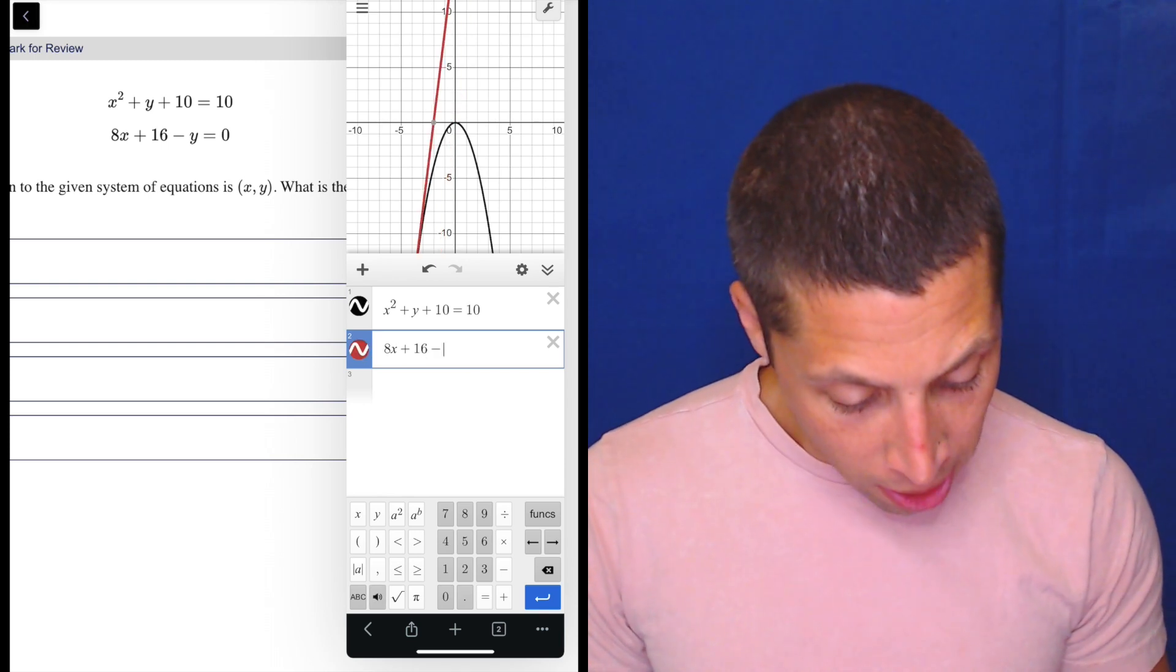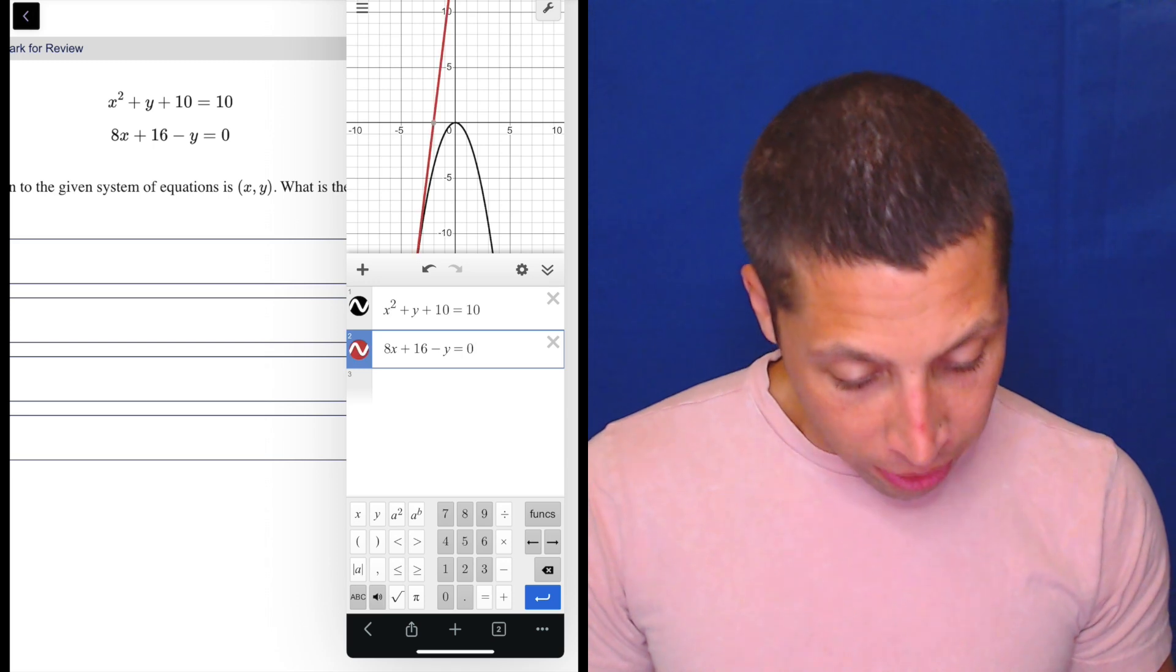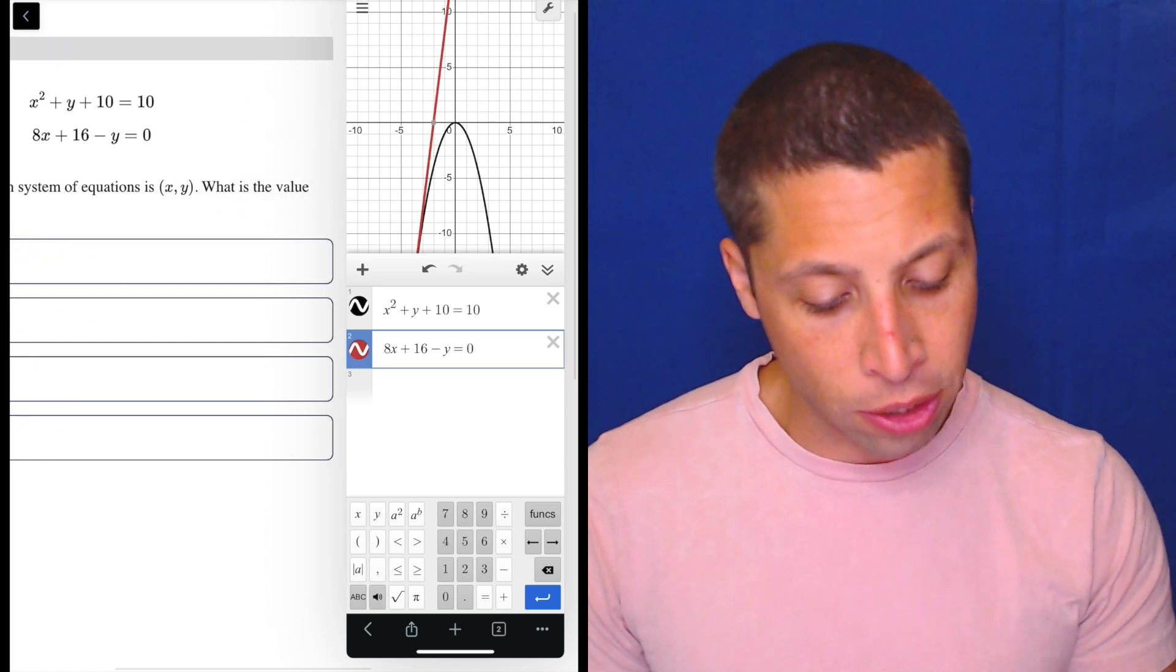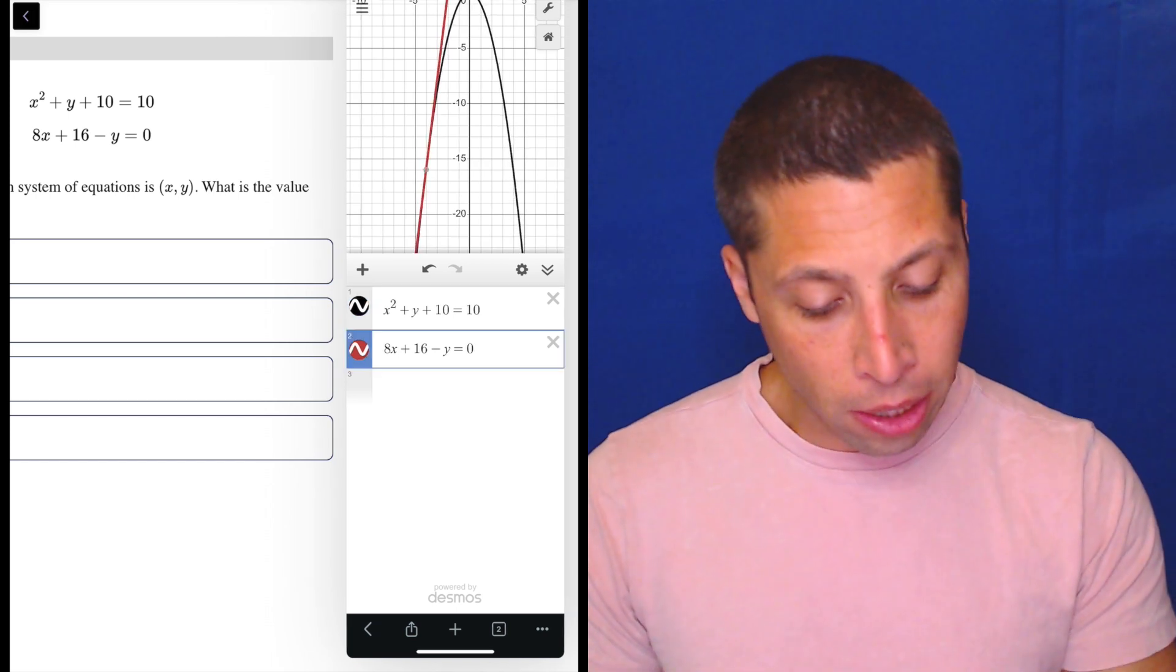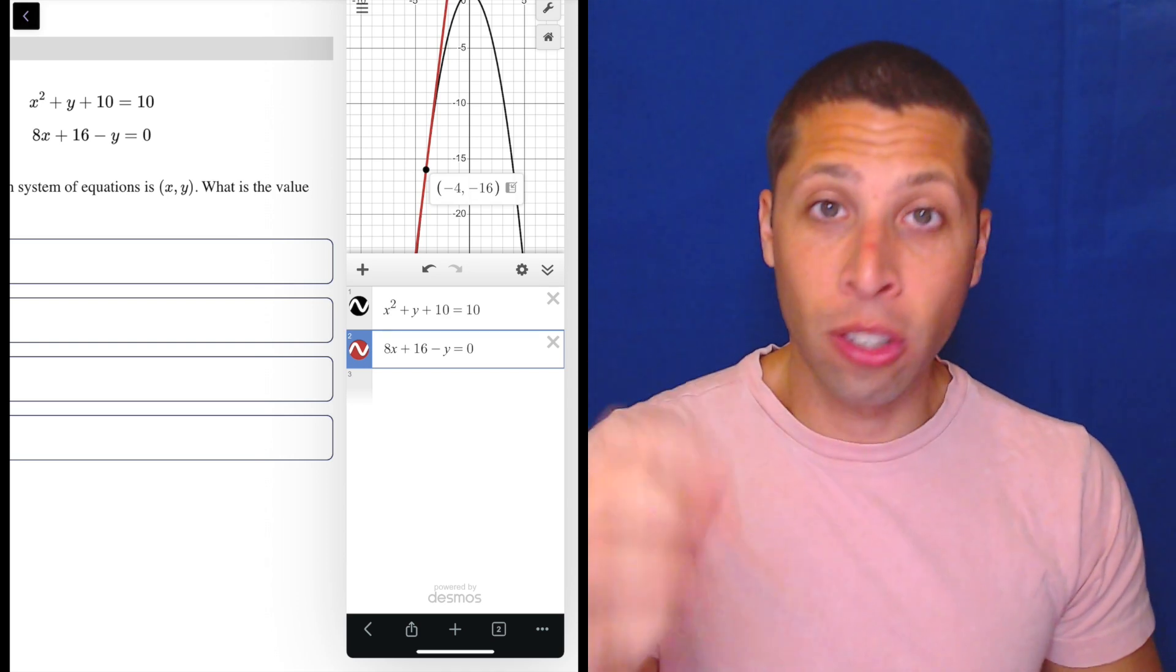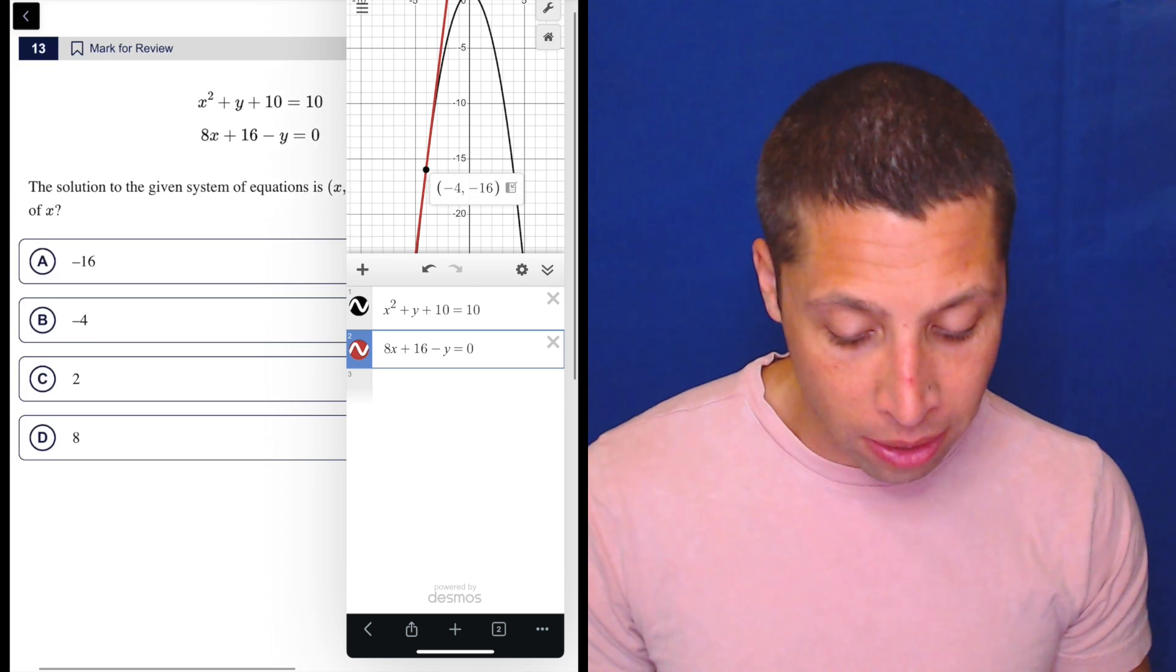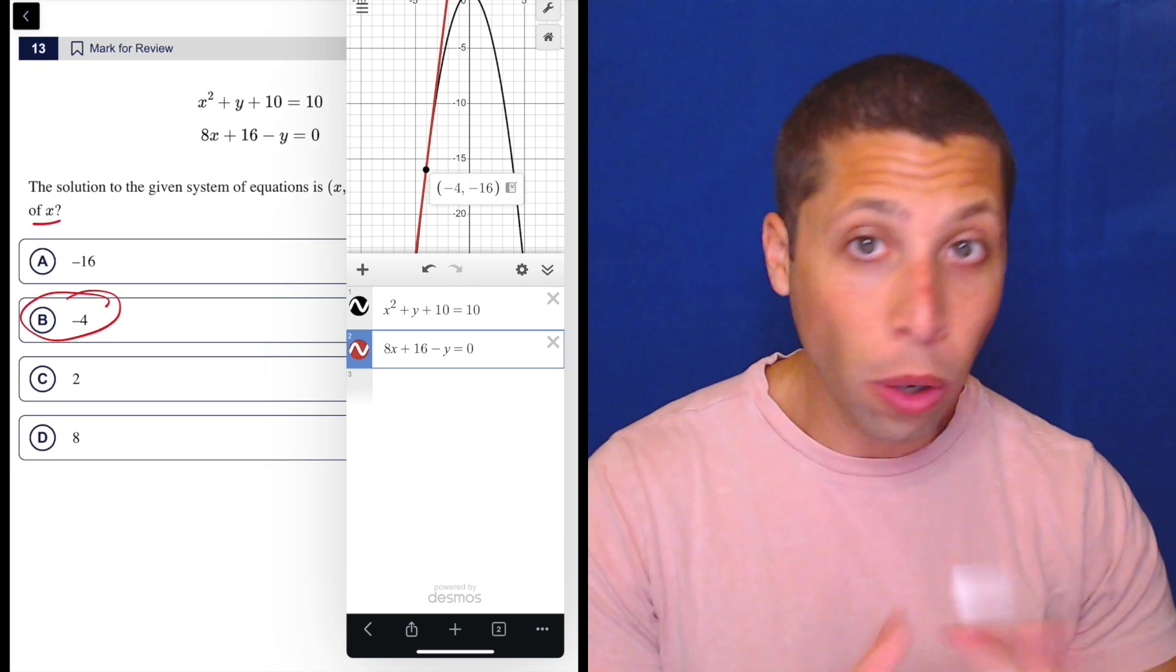If you tap it, Desmos is very smart about showing you the point—it's a tappable gray circle. When you tap it, you get the actual point: (-4, -16). They want the value of x, so -4 is the answer. No work to be done here other than typing it in.